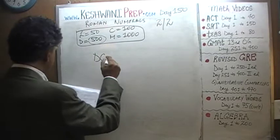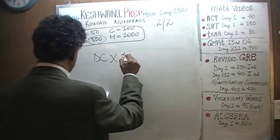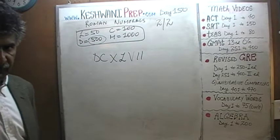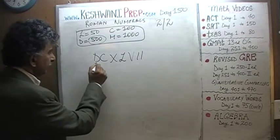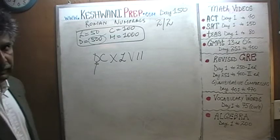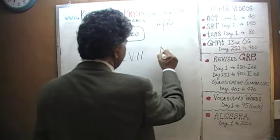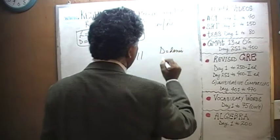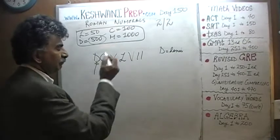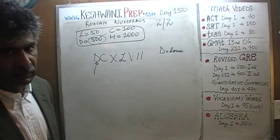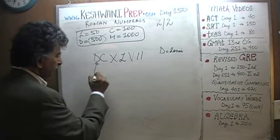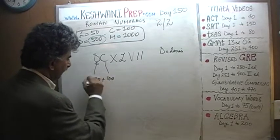Here is the first one: DCXLVII. What is this number? Let's find out. D, as we learned yesterday, stands for 500. The letter D symbolizes 'demi' — demi means half. Half a millennium; one thousand is the millennium, so half a millennium is represented with the letter D. In Latin, demi means half. So D is 500. 500 plus 100 — that is 600.